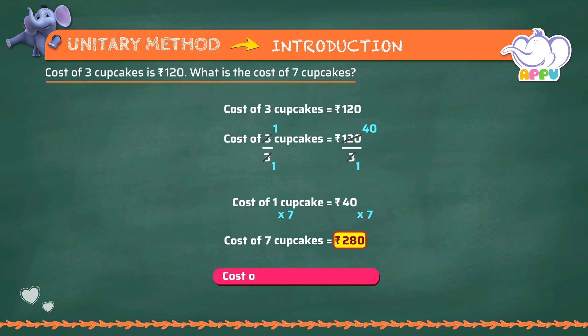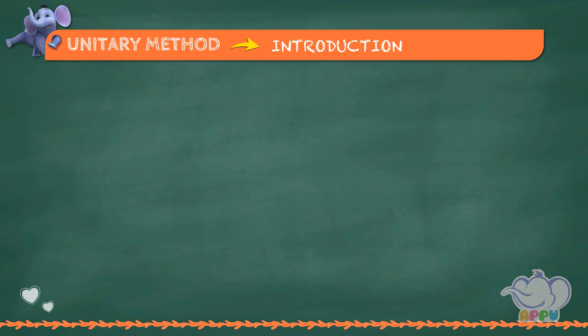So cost of seven cupcakes is rupees 280. Let's have a look at another example. 80 percent of the total score is 20. What is the total score?